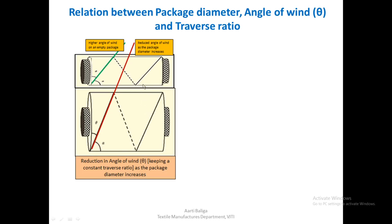If we keep the traverse ratio constant and the package increases in diameter, what is the effect on the angle of wind theta? We see that in the beginning the angle was high, and as the package diameter increases, theta reduces. So there is a higher angle of wind on an empty package, and as the package increases in size, the angle of wind goes on reducing — a reduced angle of wind as the package diameter increases.